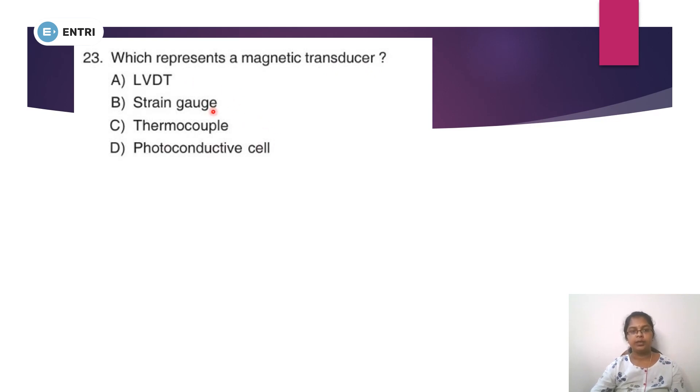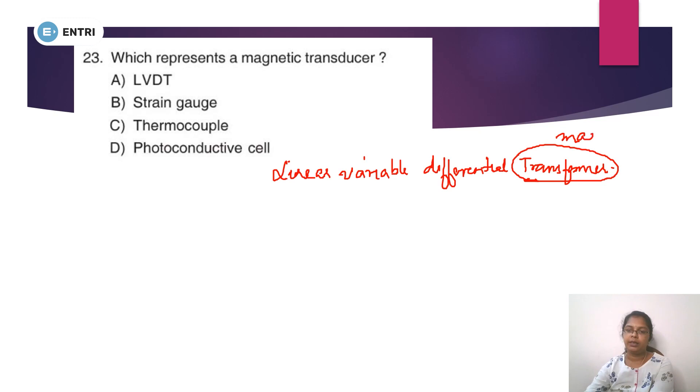LVDT - Linear Variable Differential Transformer. It works on magnetic induction, electromagnetic induction. So this is a magnetic transducer. This is the answer.